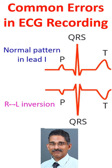Of these, the most common one is placing the electrode meant for the right arm in the left arm and vice versa. This will cause the waves which are expected to be upright to be inverted.